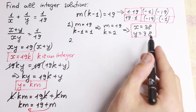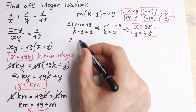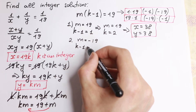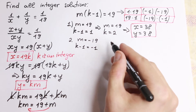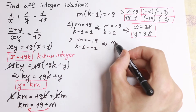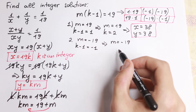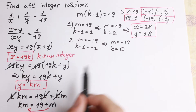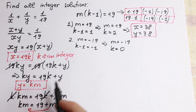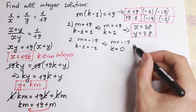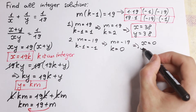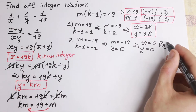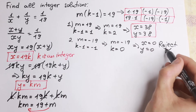Let's use the negative case: m equal to minus 19 and k minus 1 equal to minus 1. So m equals minus 19 and k equals 0. But if k equals 0, we will have x equal to 0 and y equal to 0. Moreover, x and y appear in our denominator, so we reject these roots.